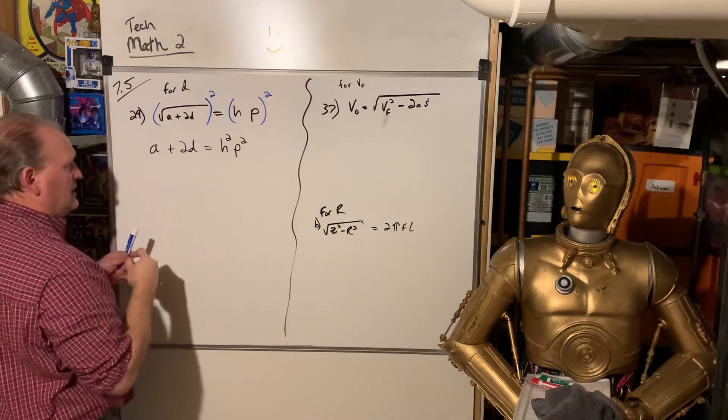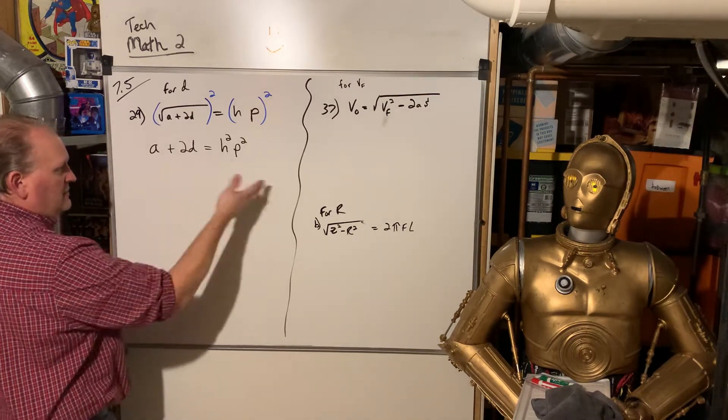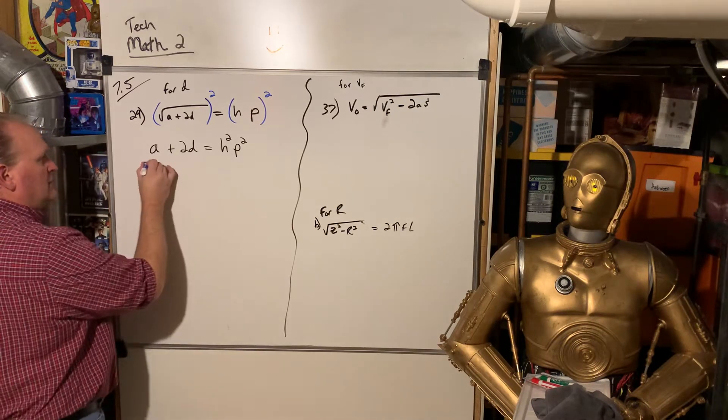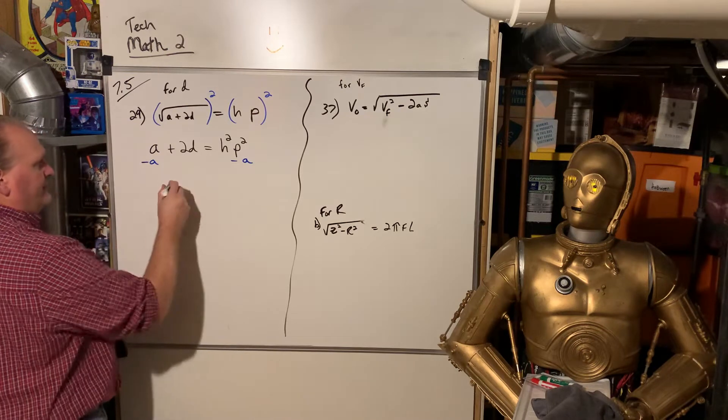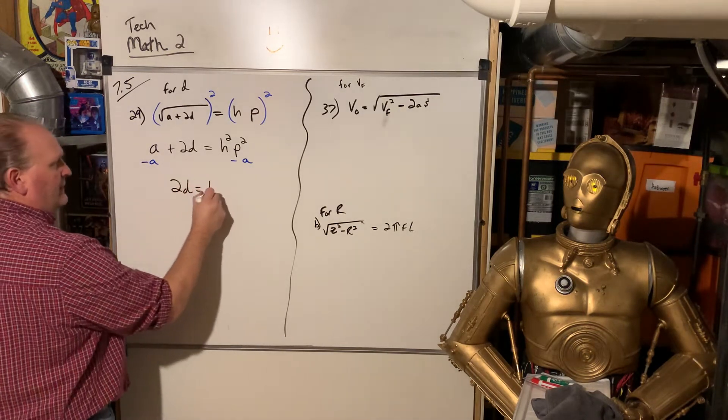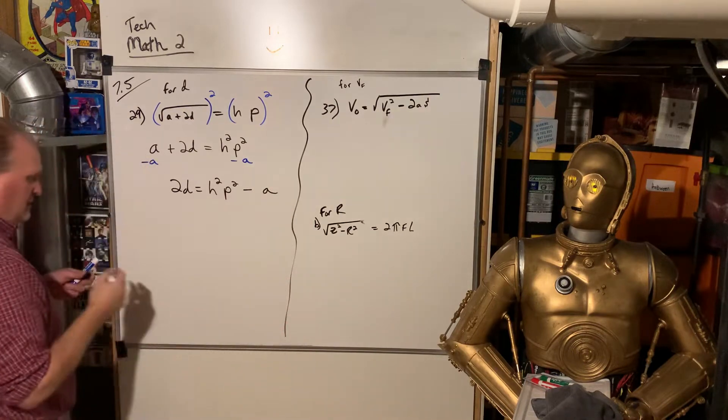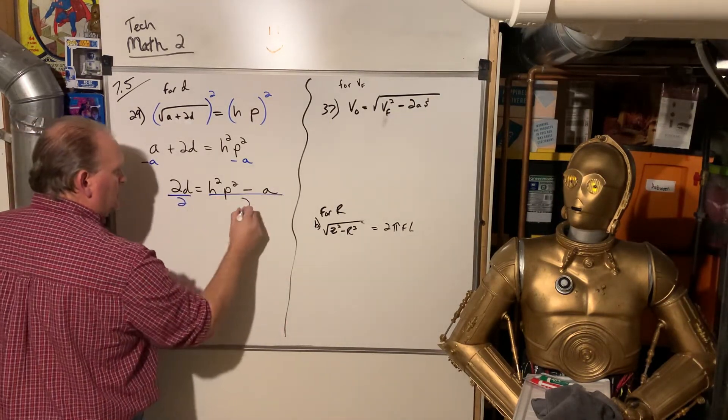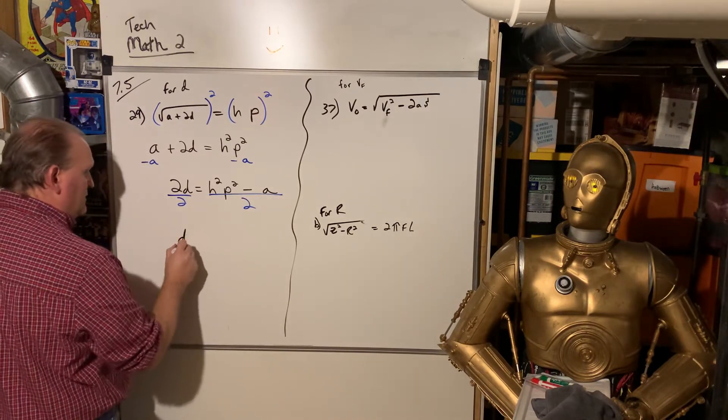Now we want to solve for D. Just like how we would solve if it was 5 plus 2D equals 10. You'd subtract this and divide by that. That's exactly what we're going to do. Subtract A, and you can't actually subtract it because they're unlike terms. Then you're going to divide by 2.